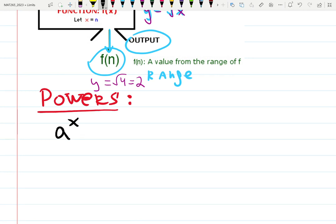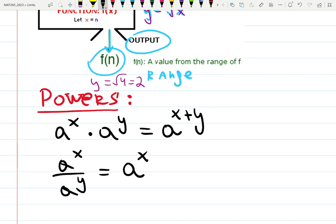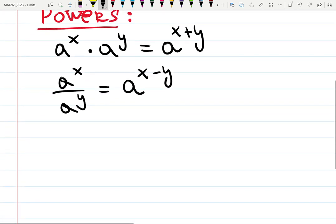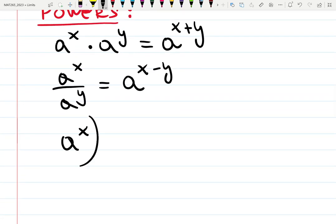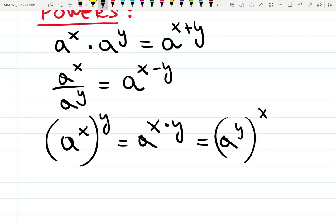a to the x times a to the y gives you a to the x plus y. a to the x over a to the y gives you a to the x minus y. And the only way they actually multiply is when you have power to power to power, that will be a to the x times y, or y times x, doesn't matter. Sometimes people even reverse it. Doesn't matter because it's a product. So this is to remember.